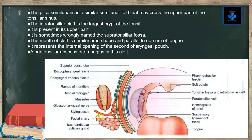To summarize the diagram: this is the facial artery, this is the submandibular salivary gland, this is the hemi-capsule of the tonsil, and this is the suspensory ligament of the tonsil. These are the fascias — the pharyngobasilar fascia and the buccopharyngeal fascia — along with the superior constrictor and the paratonsillar vein.